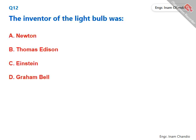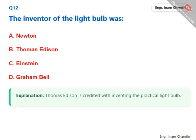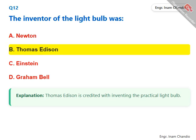The inventor of the light bulb was? Thomas Edison is credited with inventing the practical light bulb. The correct answer is B. Thomas Edison.